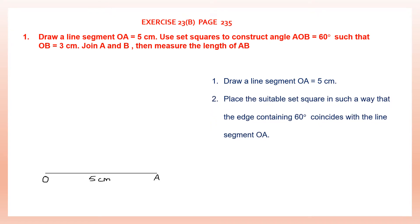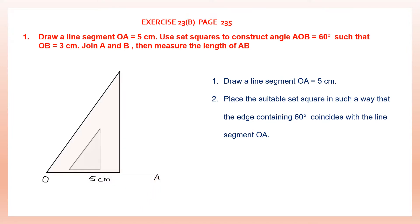Second step: place the suitable set square in such a way that the edge containing 60 degrees coincides with the line segment OA. You have to use the set square which has 60 degrees and place it along the line segment OA. This is the one that has 60 degrees — this side is 30 degrees and here we have 90 degrees.